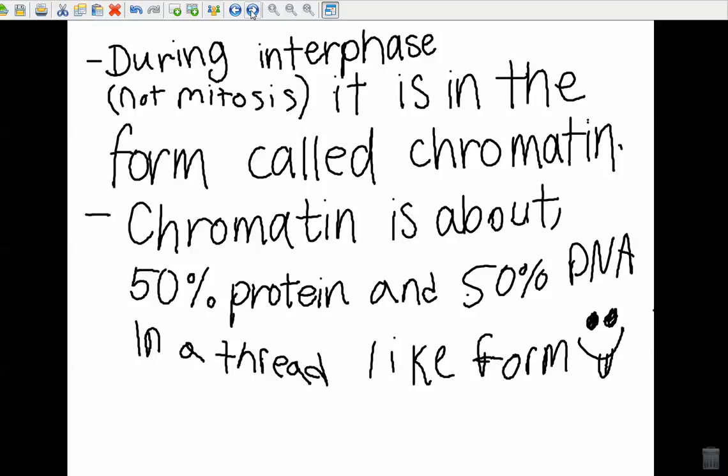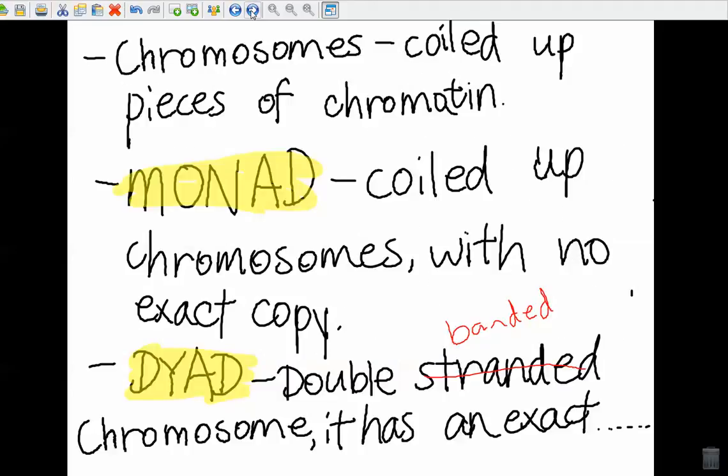Let's bring in, close by talking about this monad-dyad thing, and we'll learn how they fit into place. Chromosomes. What are chromosomes? They're coiled-up chromatin. A monad is a coiled-up chromosome with no exact copy. This really isn't 100% accurate. It's because when it coils up, we're presuming it's made copies of itself so it can do mitosis. It can do nuclear division. That's what mitosis is. So it's more of a theoretical term.